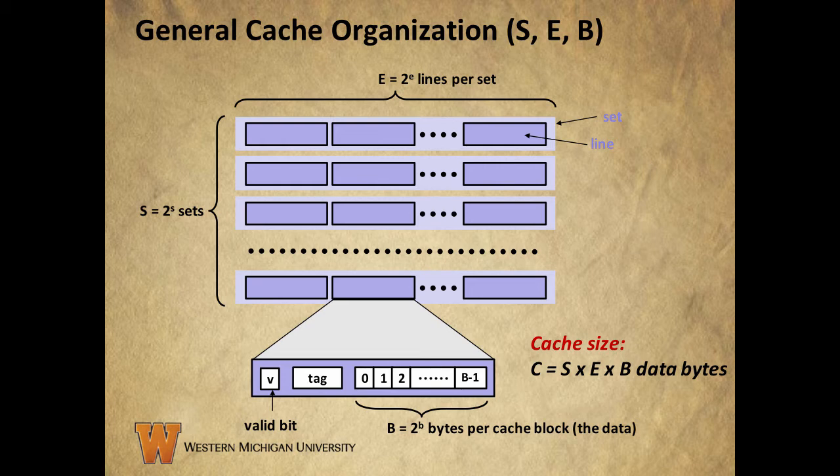So back to our illustration. Capital S is the number of sets our cache is divided into, and capital E tells us the number of lines in each set. Each line contains a valid bit, a set of tag bits, and an individual cache block of data which contains capital B bytes. We refer to the capacity of a cache based on how much actual data it can contain. Because the valid and tag bits in each line are organizational in nature, we calculate capacity by multiplying the number of sets by the number of lines per set times the number of bytes of data per line. We ignore the valid and tag bits when talking about the capacity of a cache memory.